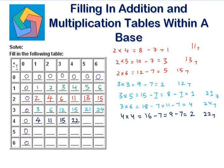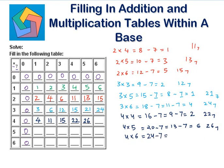4 times 5 is 20. 20 minus 7 is 13, and 13 minus 7 is 6. So this is 26 to the base 7. 4 times 6 is 24. 24 minus 7 is 17, 17 minus 7 is 10, and 10 minus 7 is 3 — subtracting 7 three times — so this is 33 to the base 7.